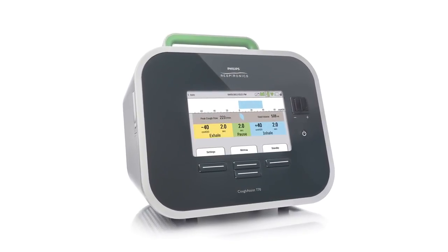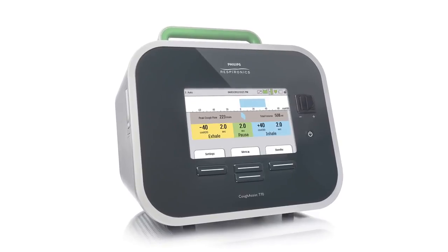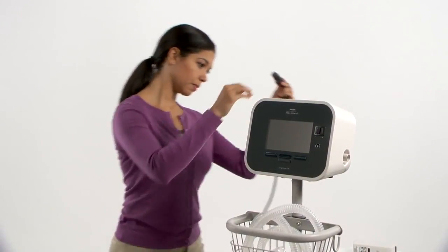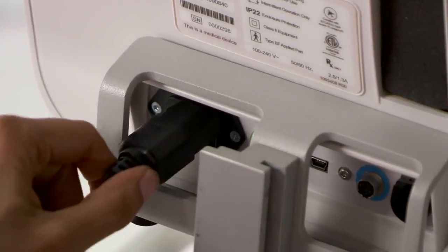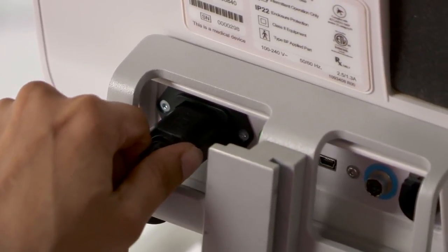CoughAssist T70 is designed to be easy to set up and operate. To power the device, press the power cord firmly into the back of the device and plug the other end into an AC outlet.